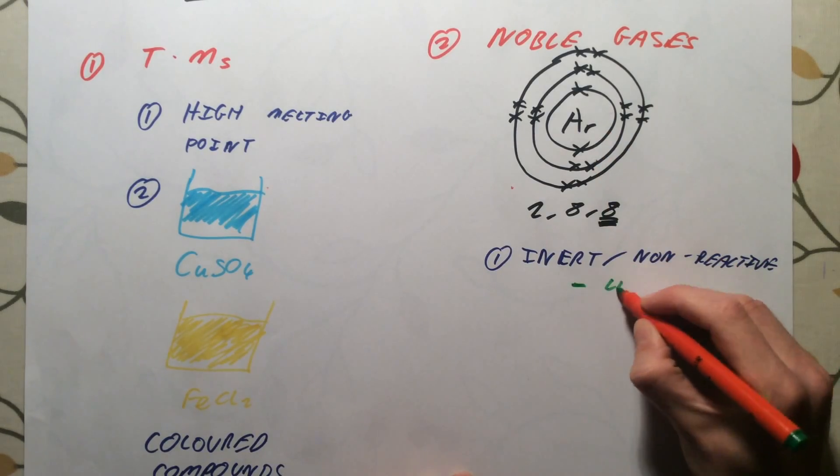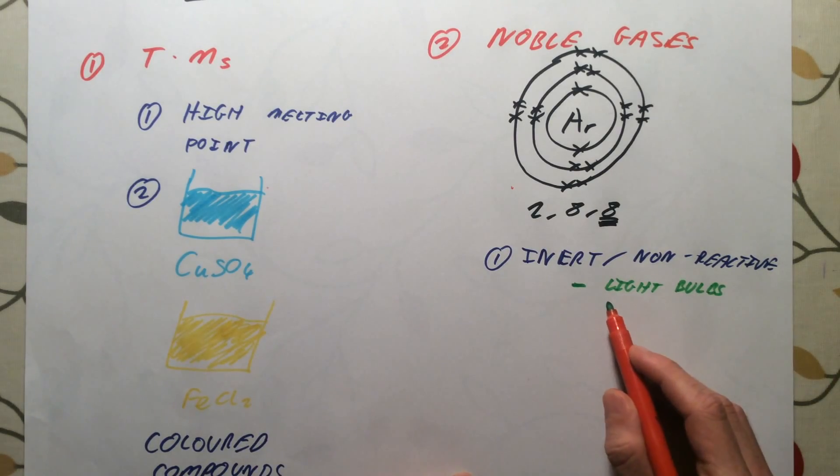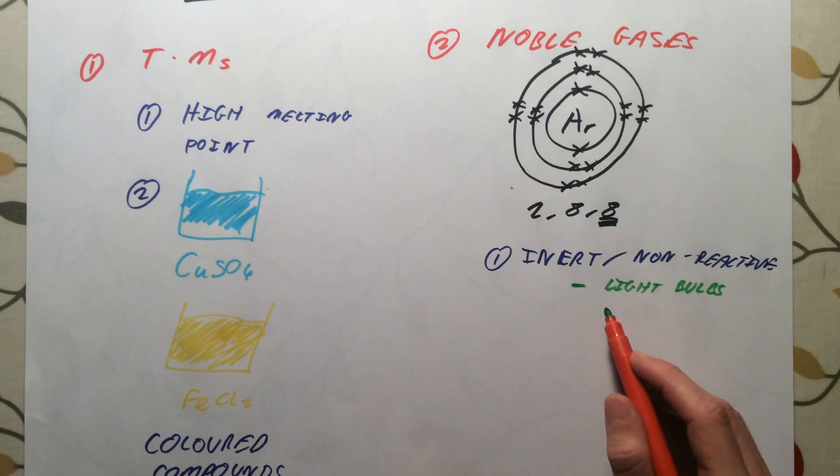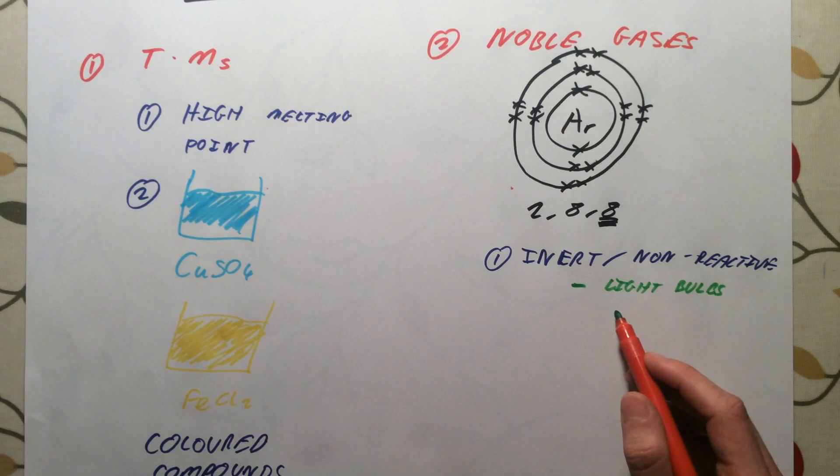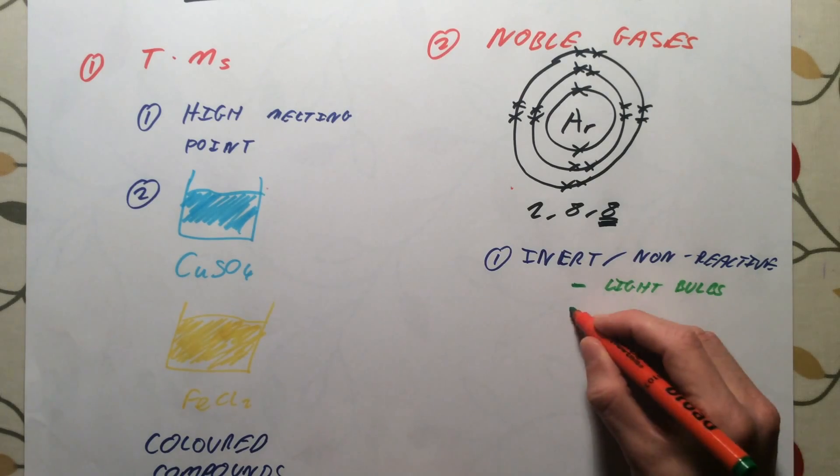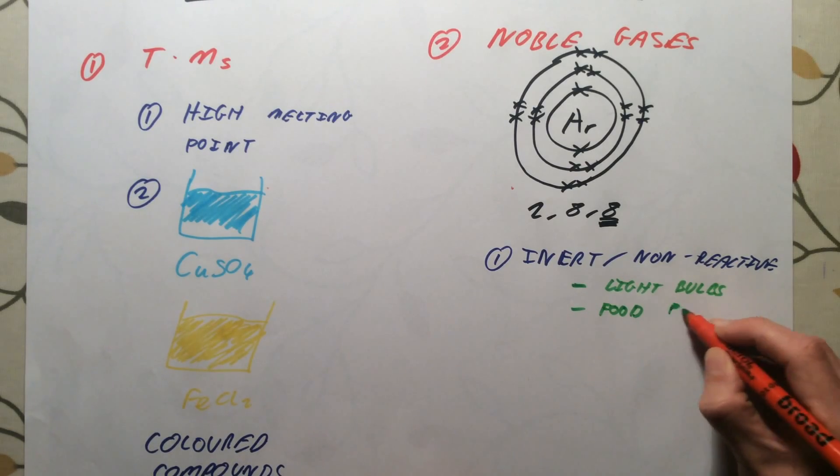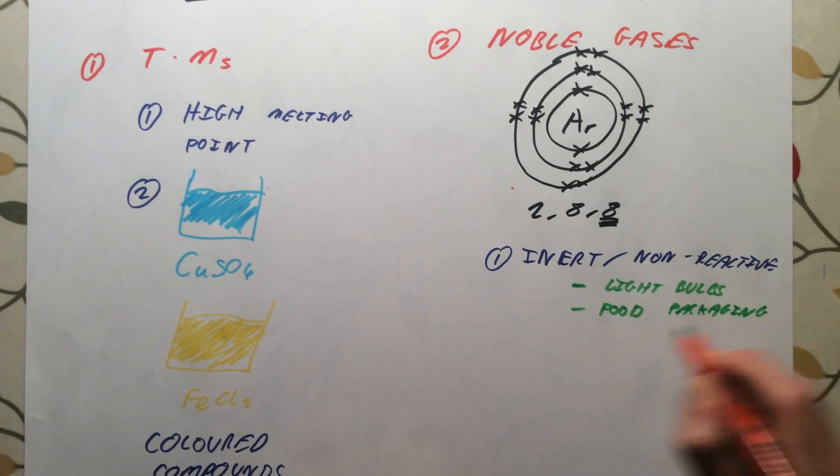Argon, in particular, is used in light bulbs. This is because the filament in a light bulb, at least one of the old-fashioned light bulbs, gets extremely hot when you turn the light bulb on. It gets so hot that it glows and gives out light. If you had normal air inside that light bulb, the oxygen in the air would react with that hot filament, and it would cause your light bulb to blow. Because argon is inert or non-reactive, you have it in there with the hot filament, and it is not going to react with the filament, and therefore your light bulb will not blow. So you use it for light bulbs. You also use it in things like food packaging, particularly for things like fruit, to stop them reacting. And it is also used when you are welding, to stop the hot metal from reacting with oxygen.